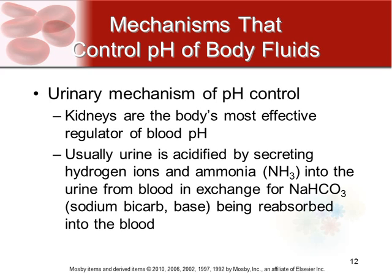The urinary mechanism of pH control: your kidneys are your body's most effective regulator of blood pH. Normally urine is very acidic because the kidneys secrete hydrogen ions and ammonia — both acidic — into the urine from blood, exchanging them for sodium bicarbonate, which is a base, and that gets reabsorbed into the blood. The kidneys can do this more or less based on what the body needs. The pH of your urine can range from about 3.5 to 4.5 depending on what your body is trying to maintain.